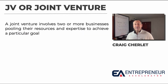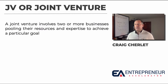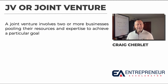JV, or joint venture, is very popular amongst affiliate marketers. They join together to promote each other and grow together. These are great ways to grow your network, get into other people's networks, and build relationships. Because at the end of the day, affiliate marketing — just like any other business — is about relationships, and building those will help you create a sustainable online business.